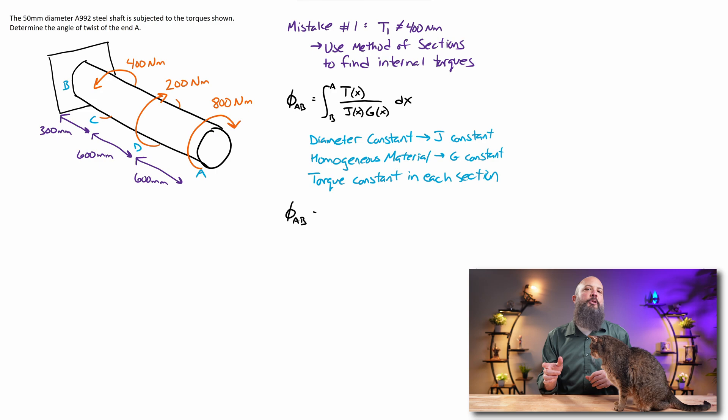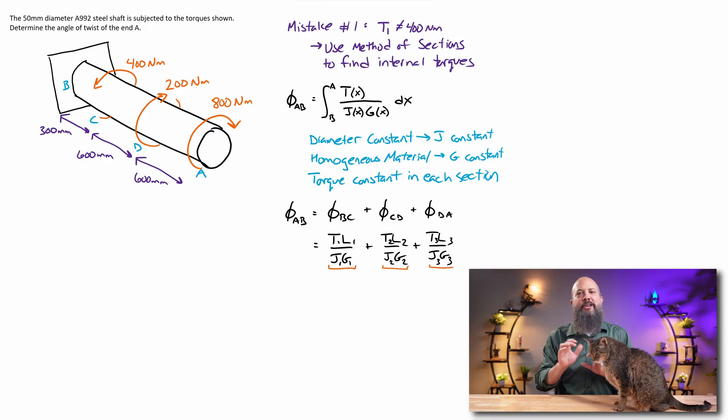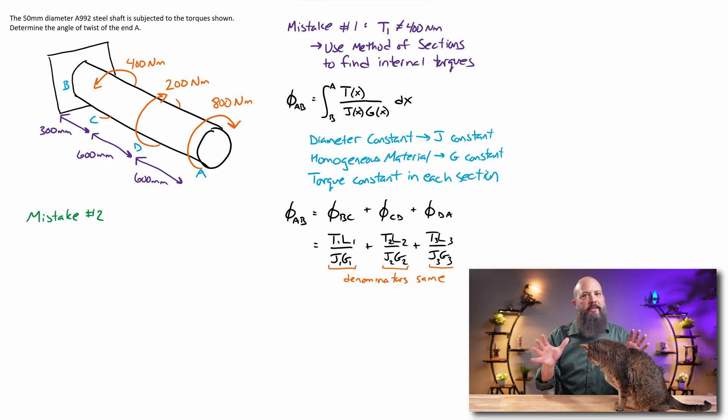This does let us simplify this problem to one of just a summation instead of an integral. We're going to add the angle of twist B to C, plus angle of twist C to D, plus angle of twist D to A, all three of those together, TL over JG. Add all those up, that will give us the overall angle of twist from A to B. So, the next step is going to be to find our three torque values.